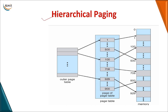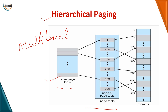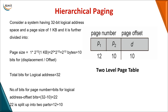The first technique is hierarchical paging, also called multi-level paging. Instead of one page table, you break it into two parts: an outer page table and an inner page table, with the actual physical memory at the end. You establish a link from the outer page table to the inner page table and finally to the actual memory location.